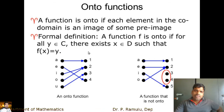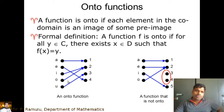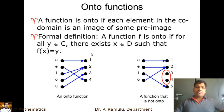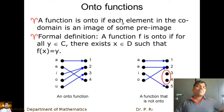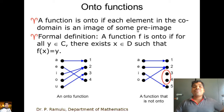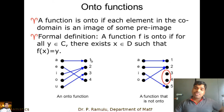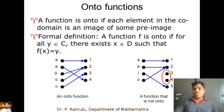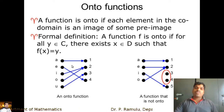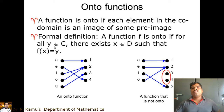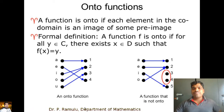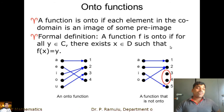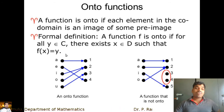Let me explain using domain and codomain. The domain is D and the codomain is C. According to the first definition, every element of the codomain must have a pre-image. If the elements of the codomain are 1, 2, 3, 4, 5 and each has a pre-image, then this is an onto function.